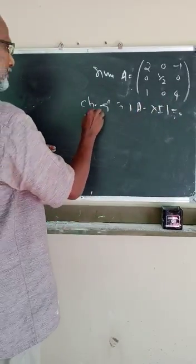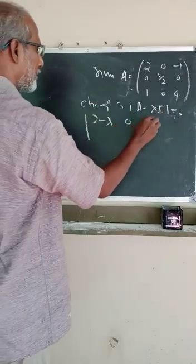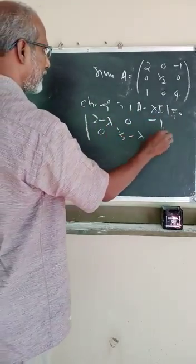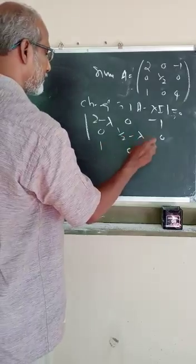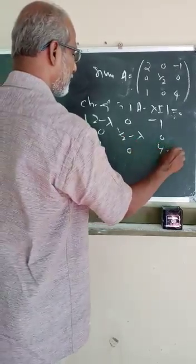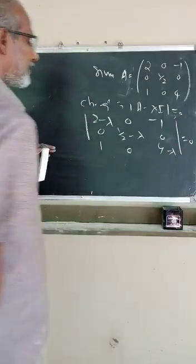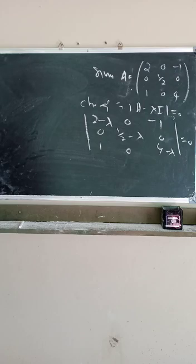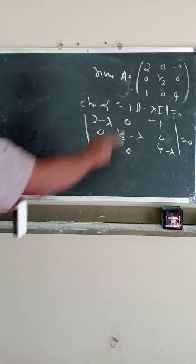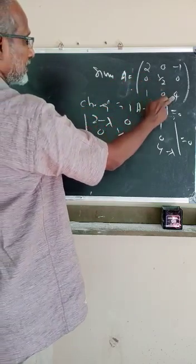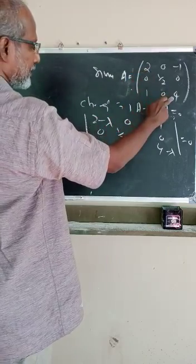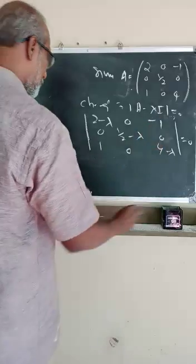That is, we can write the determinant: (2 minus lambda), 0, minus 1, 0, (1/2 minus lambda), 0, 1, 0, (4 minus lambda) equal to 0. We can use the following formula for finding the characteristic equation: lambda^3 minus (sum of main diagonal elements) times lambda^2 plus (sum of minors of main diagonal elements) times lambda minus determinant A equals 0.